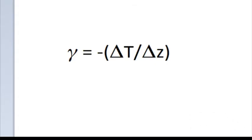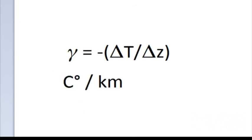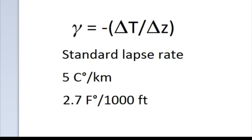Lapse rate is represented by the Greek letter gamma (γ), defined as the change in temperature over the change in vertical distance. The normal expression of lapse rate uses units of Celsius degrees per kilometer. In a standard atmosphere, the value is about 5 Celsius degrees per kilometer, meaning for every kilometer you go up, you lose 5 Celsius degrees.